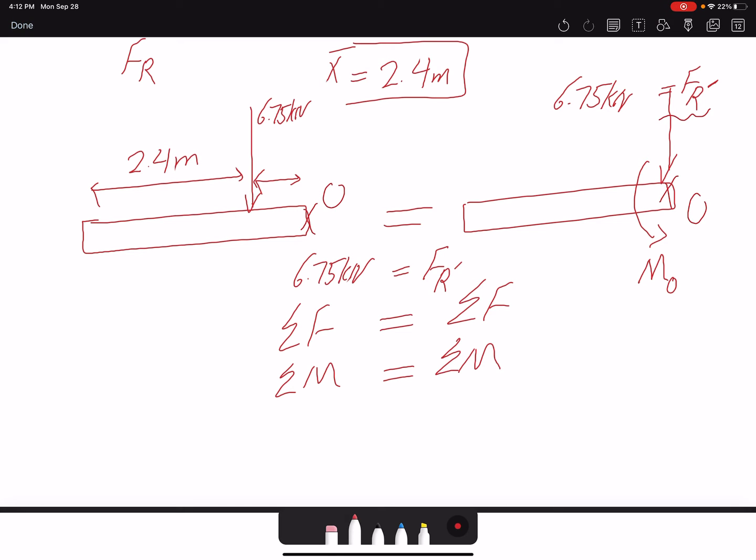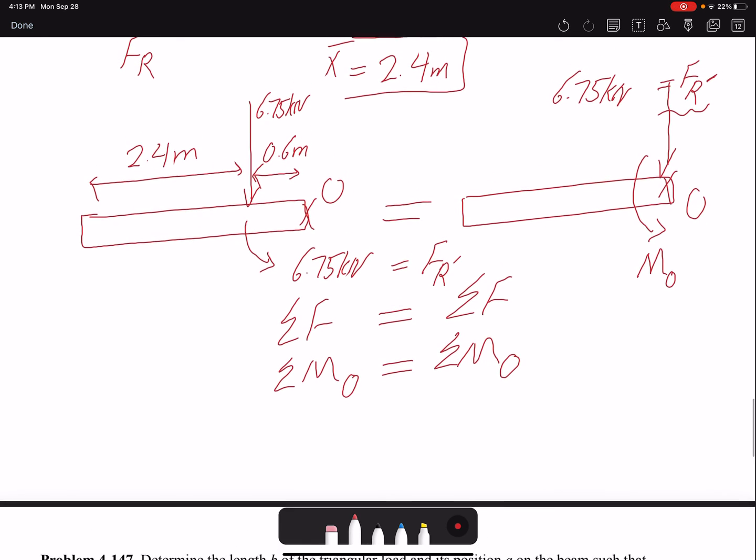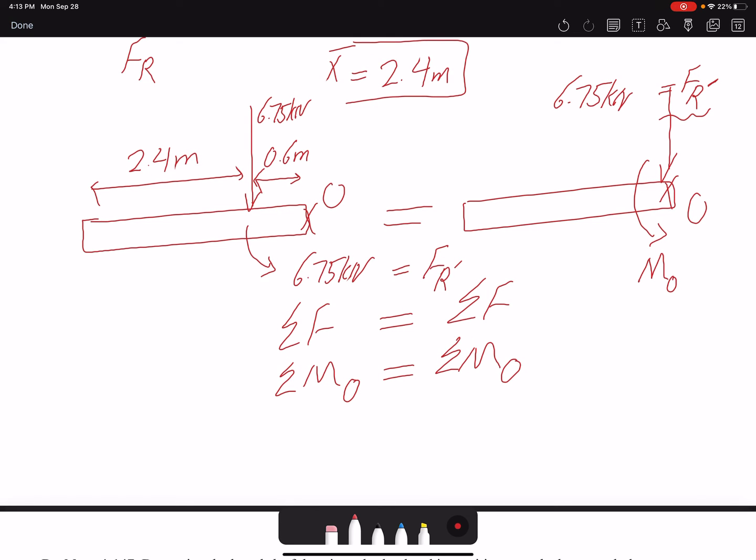So let's find the moment about point O for each beam. For the beam on the left, I have 6.75 kN, and this moment arm is 0.6 meters, creating a counterclockwise moment so the value would be positive. I will have 6.75 times moment arm 0.6.